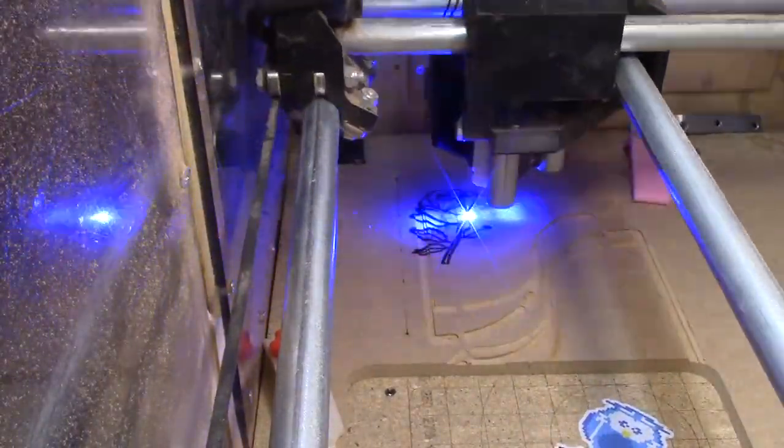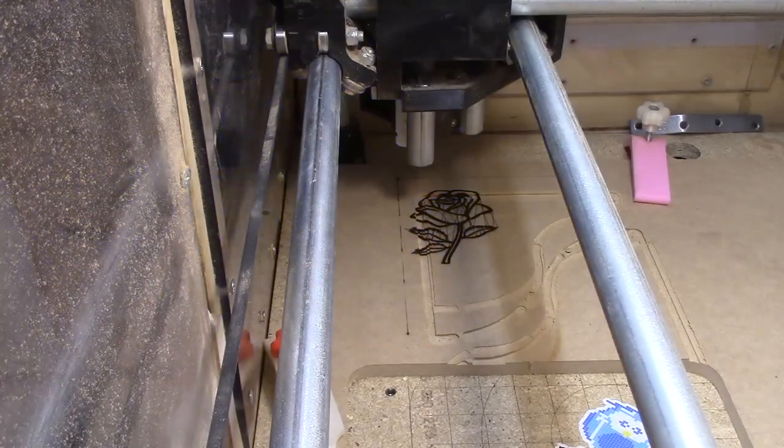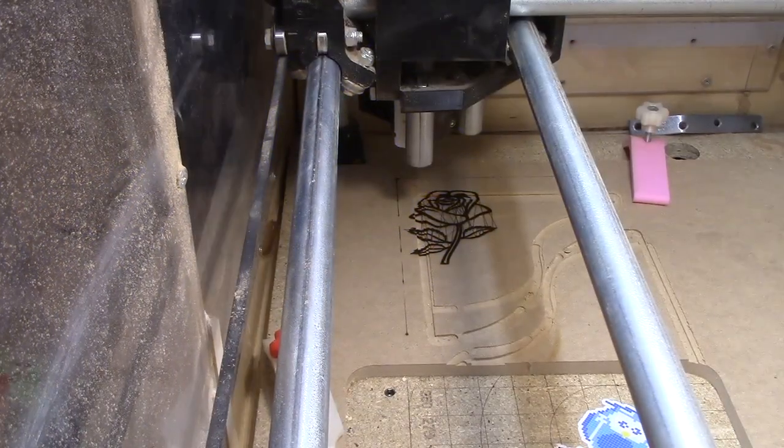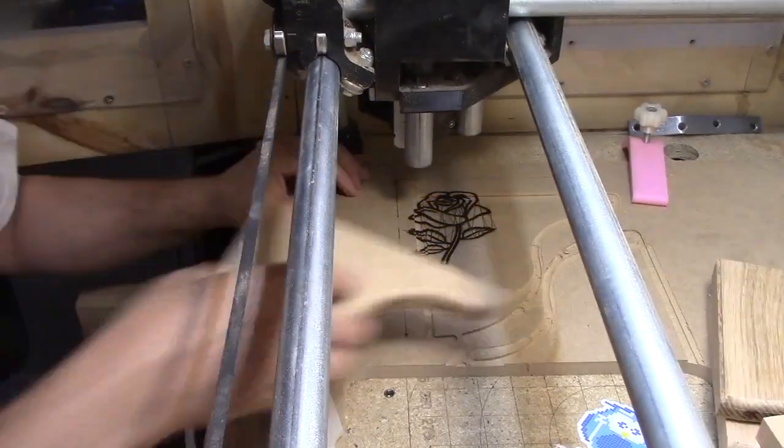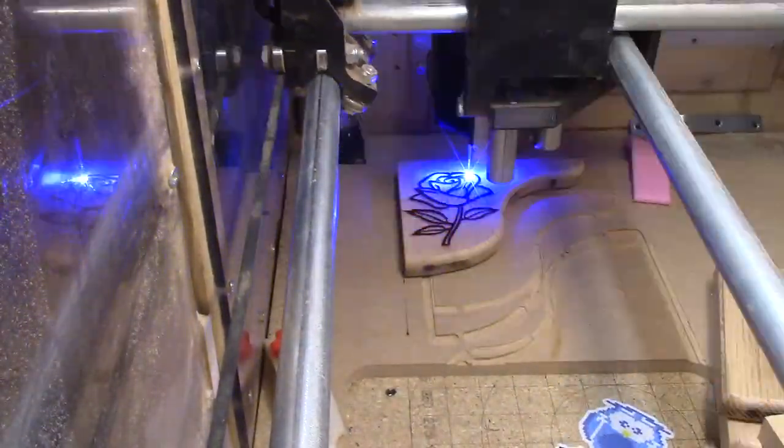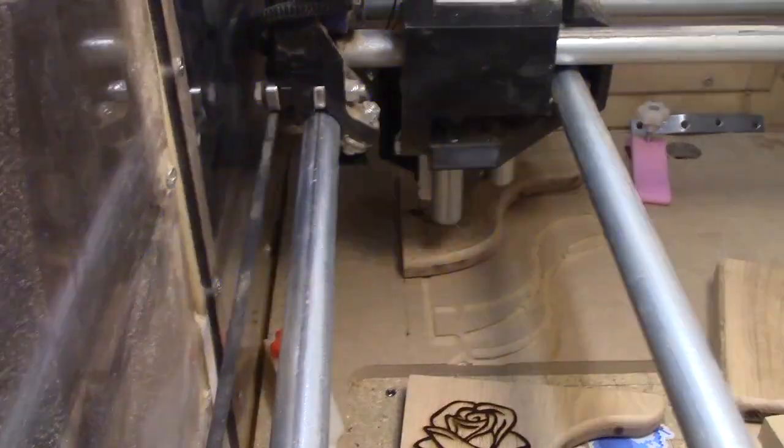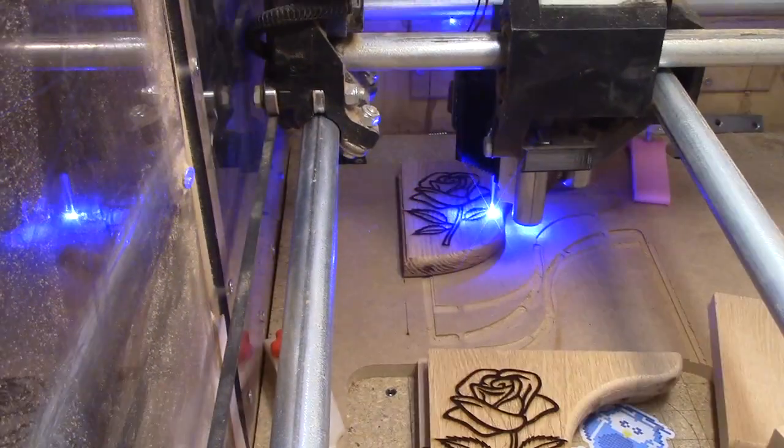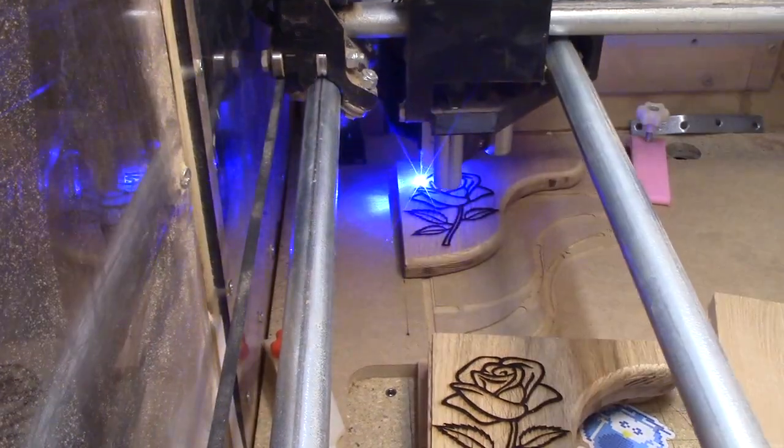My wife had picked out a rose she wanted engraved on each side of the corbel. Here I'm cutting it into the scrapboard just so I can position my piece of wood properly. And there's the first cut into oak. Of course I had to do this on all six pieces on both sides, but I won't bore you with all those jobs.